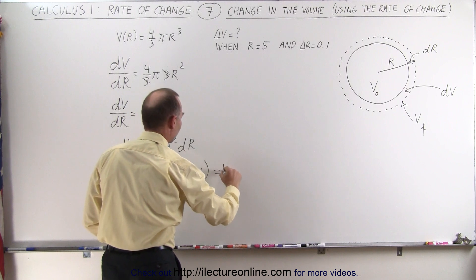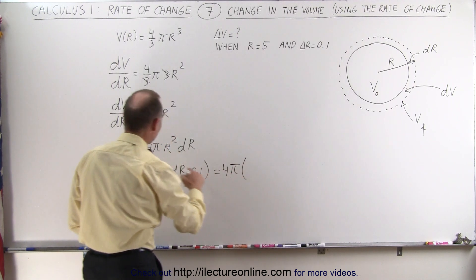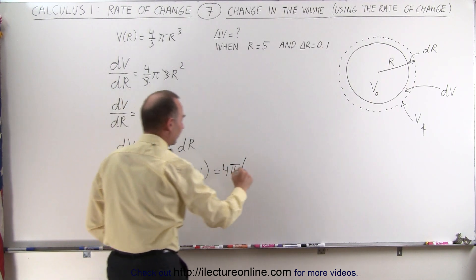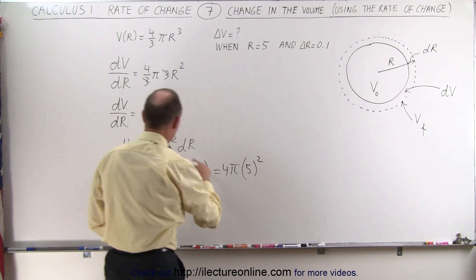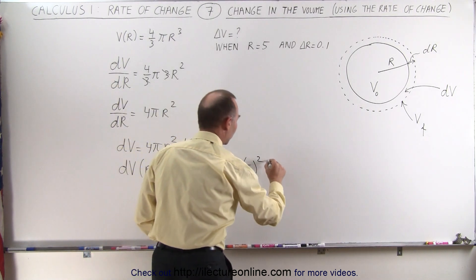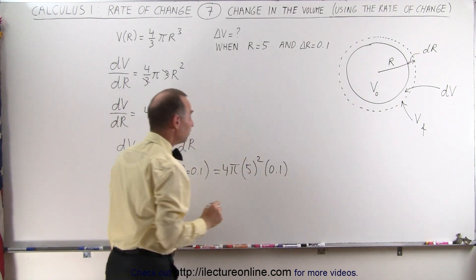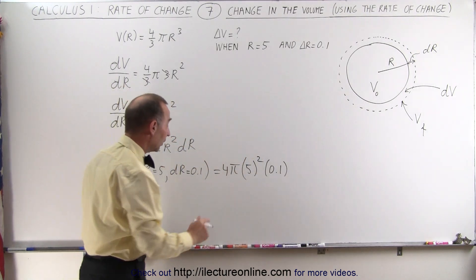And so that gives me 4π times r squared, that would be 5 squared, and dr would be 0.1. Those are given in the problem. So when we work this out, we get the following.